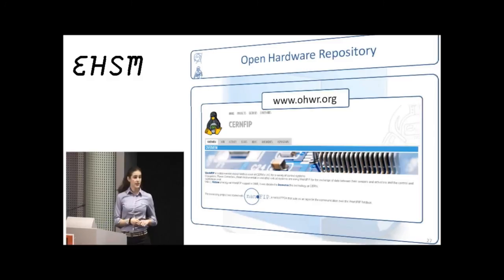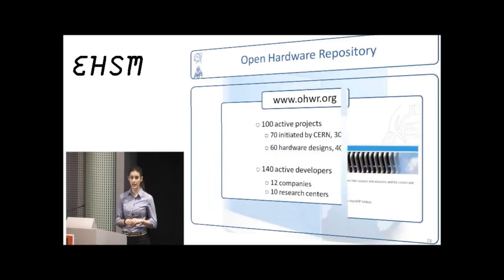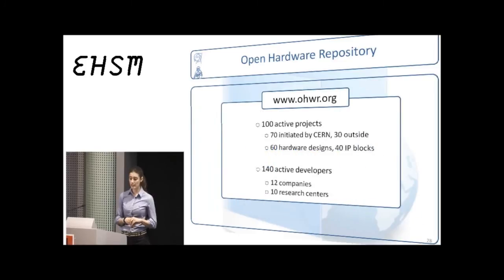Today, there are 100 active projects, 70 initiated by CERN and 30 outside CERN. There are 60 hardware designs and 40 IP blocks. We are 140 active developers coming from 12 companies and research centers.